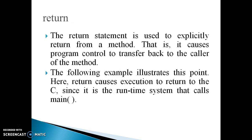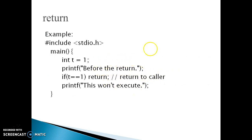The return statement is used to explicitly return any value from a method — it causes program control to transfer back to the caller of the method. The following example illustrates this point: here the 'return k' causes execution to return to the caller. Since it is the runtime system that calls the main function, this is the example of the return statement. Here we use the return keyword — it returns the value to the caller function.